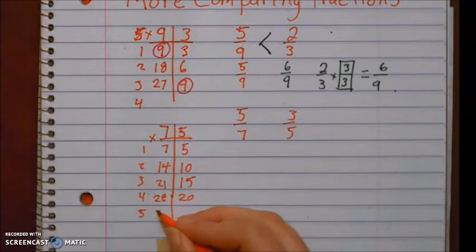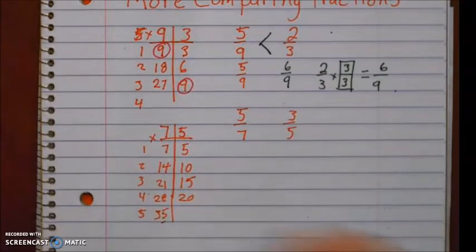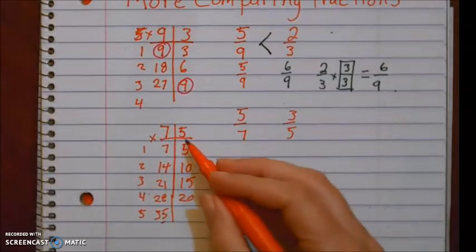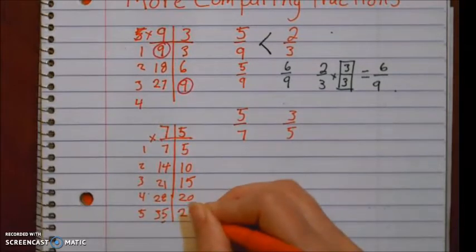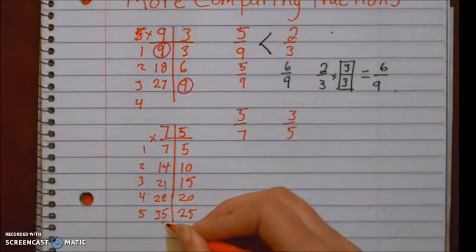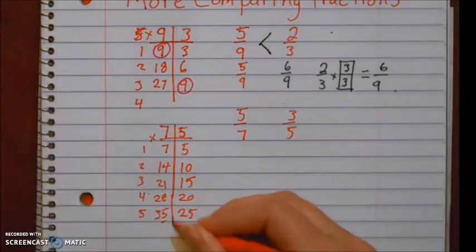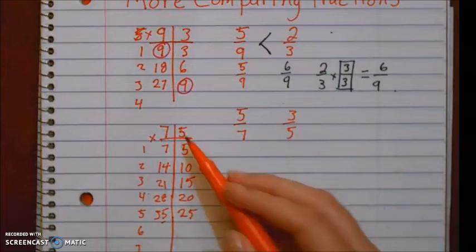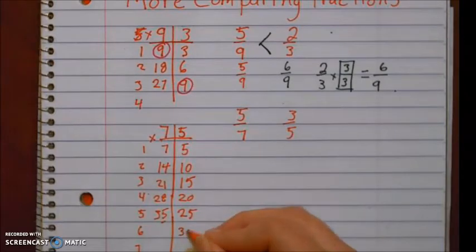Seven times five is 35. Oh see, I like that five right there. That gives me a little bit of a clue, but I'm not there with my fives yet. Five times five is 25. I'm going to leave this one alone for just a minute because I do like that five, but I'm going to keep going with my fives. Five times six is 30. Five times seven is 35.